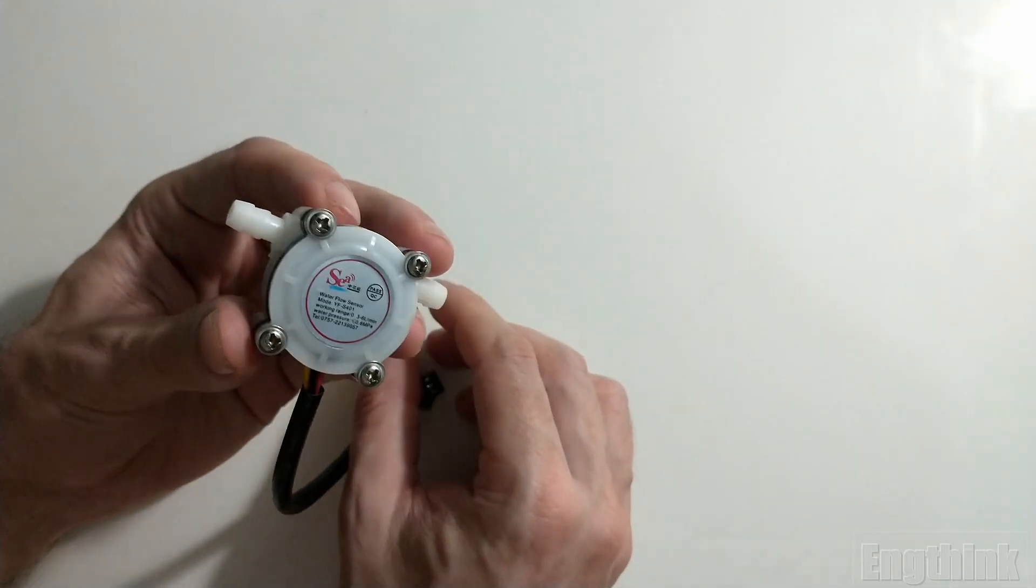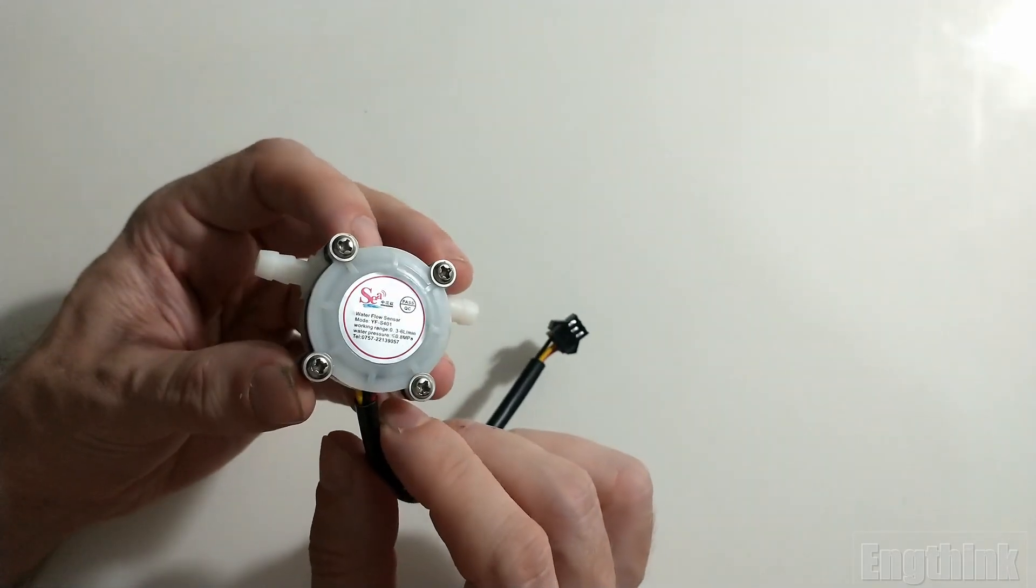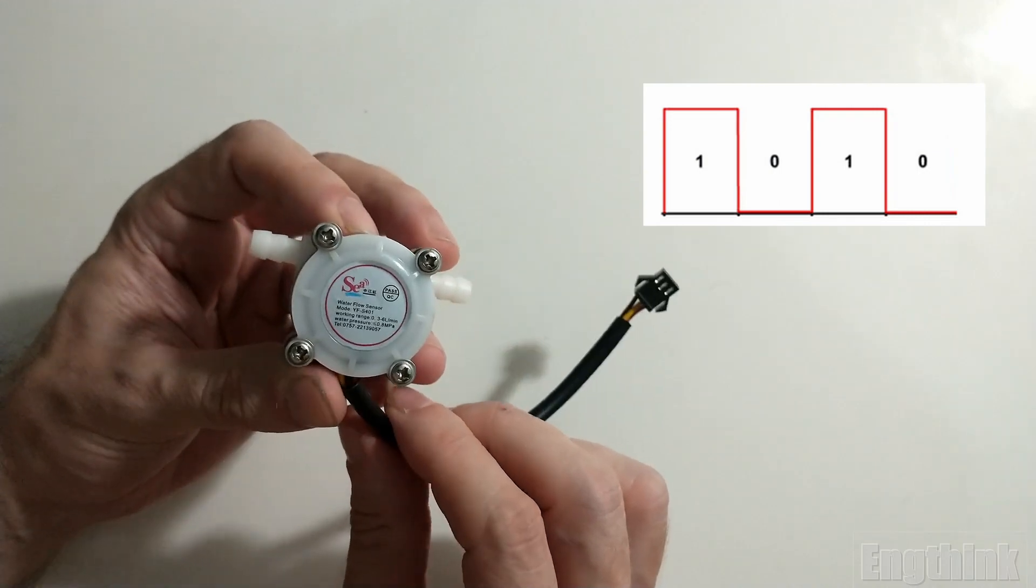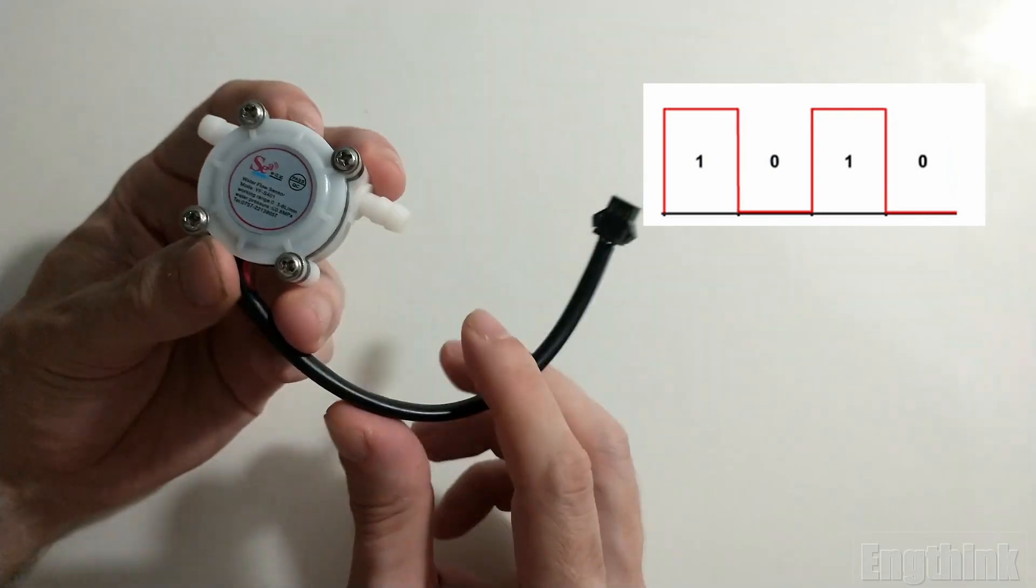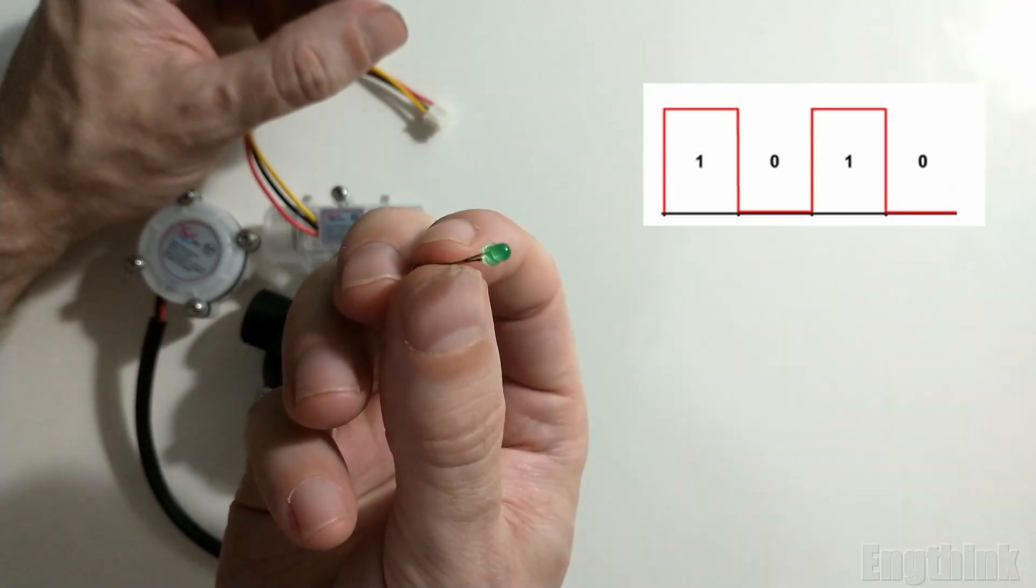We need to know what the sensor will generate. As I mentioned before, the flow sensor will generate pulses. To test that, there are two ways to do it. One of them is using some kind of signalization, and for this we're going to use an LED.